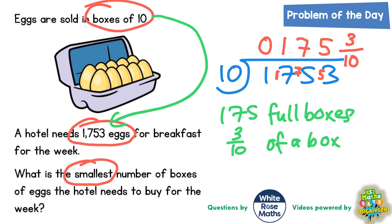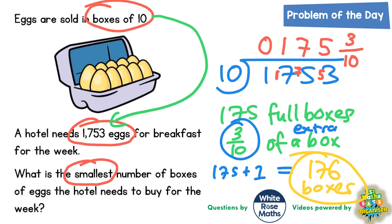So because we need an extra 3 from another box, we can't just buy 175 boxes. This 3 tenths of a box is an extra box, so we must buy the 175 boxes plus one extra box that will contain the 3 extra eggs. And that makes a total of 176 boxes. So the final answer is 176 boxes.